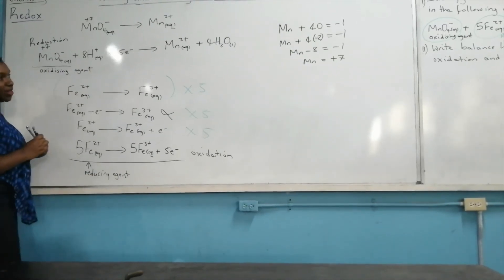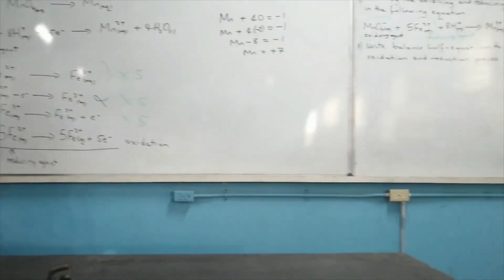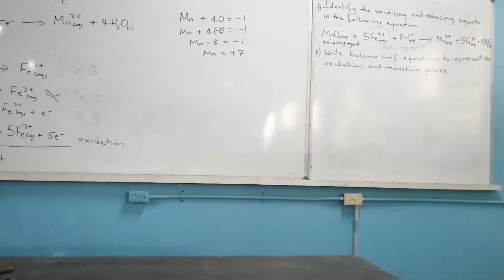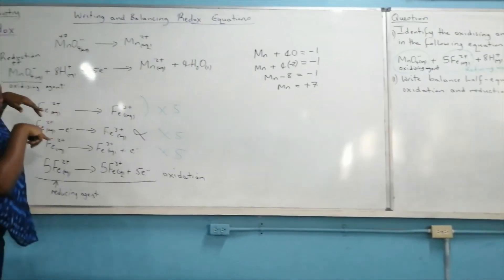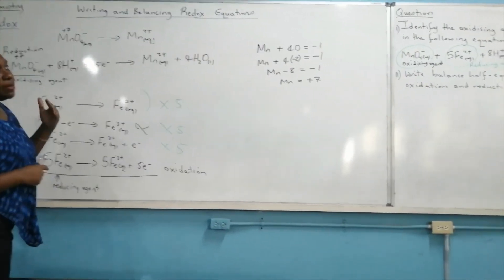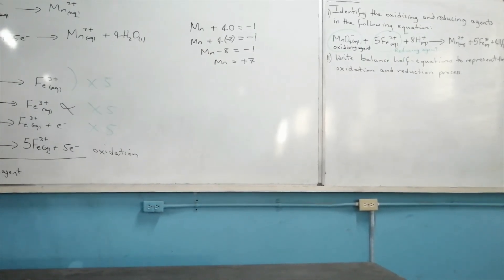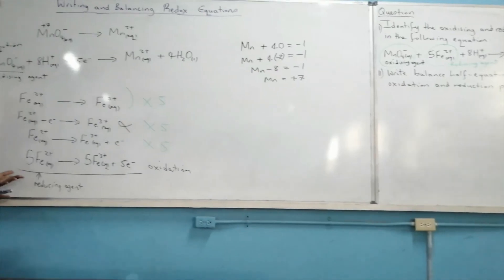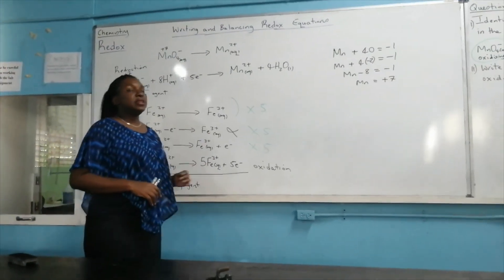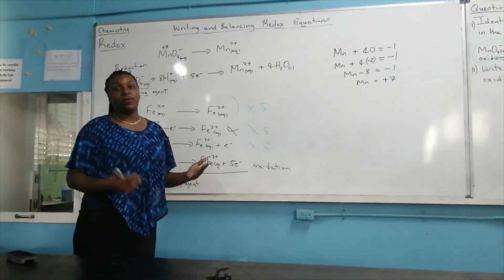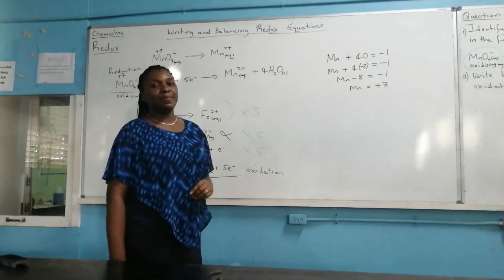So five iron 2 ions each lose one electron to give five electrons to the permanganate ion, reducing it to Mn²⁺, and produce five Fe³⁺ ions in the process, along with water molecules. That is it in terms of writing and balancing redox half equations and redox equations on the whole. This is Stephen Lenz Massey — see you for the next video.